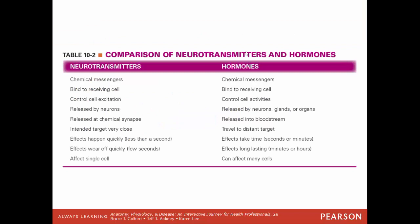Here is a side-by-side comparison between neurotransmitters and hormones. Both are chemical messengers that bind to a target cell. Neurotransmitters control how excited a cell is; hormones control a cell's activities. Neurotransmitters are released by neurons at the synapse and target nearby cells, with effects happening in less than one second. Hormones can be released by neurons, glands, or organs into the blood, traveling to distant targets. Their effects take time to kick in but last much longer, and can affect hundreds of thousands or even millions of cells simultaneously.